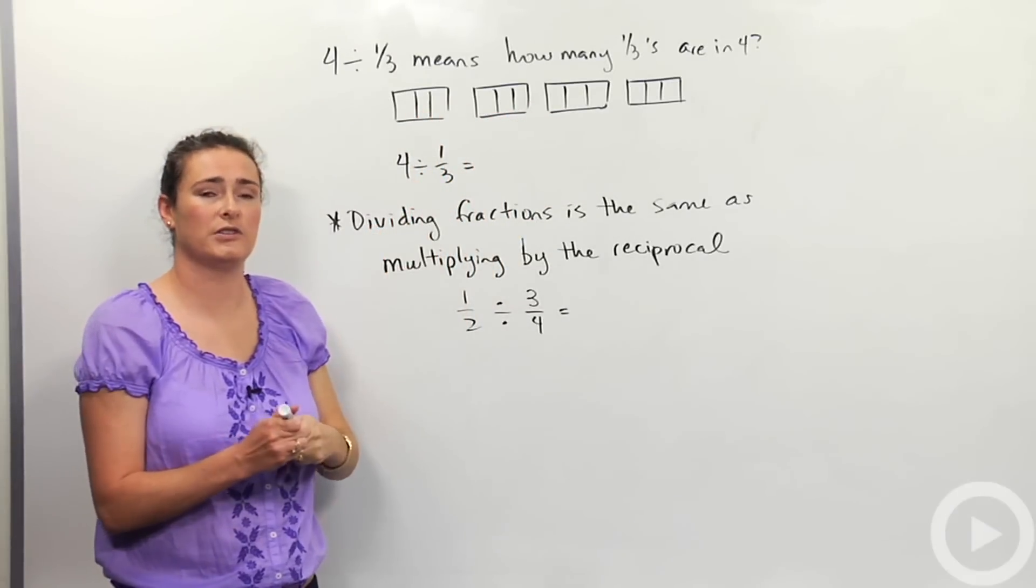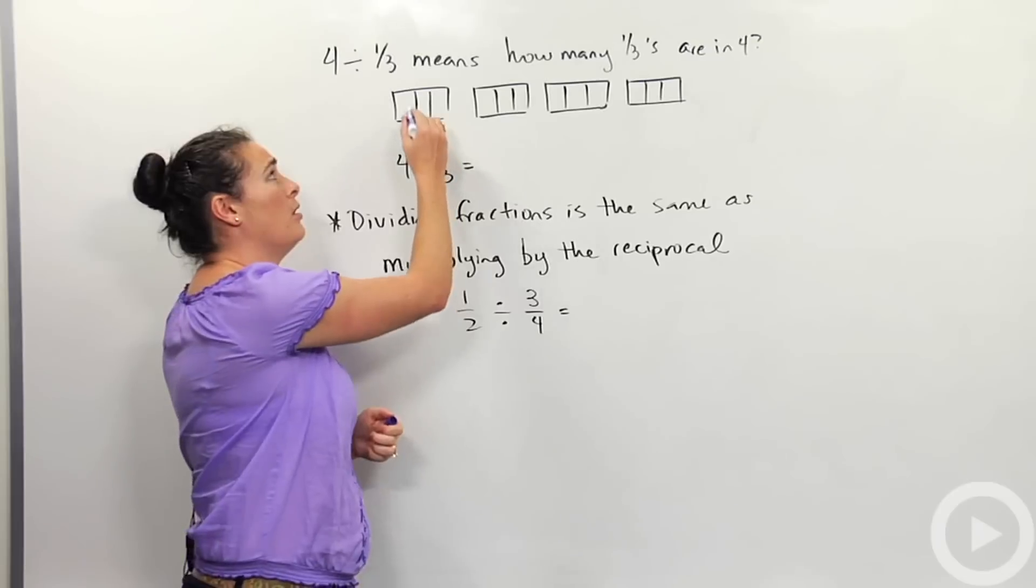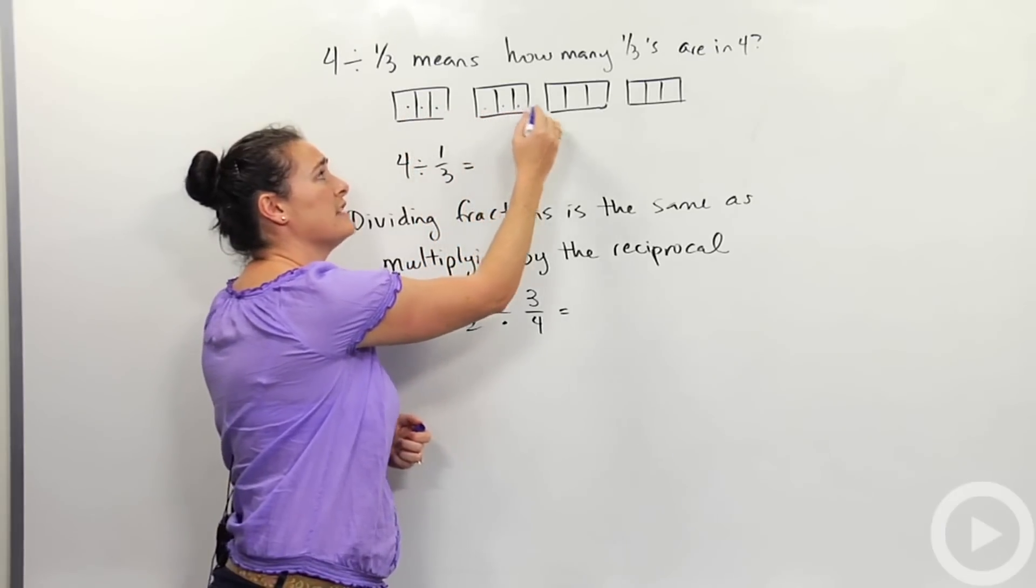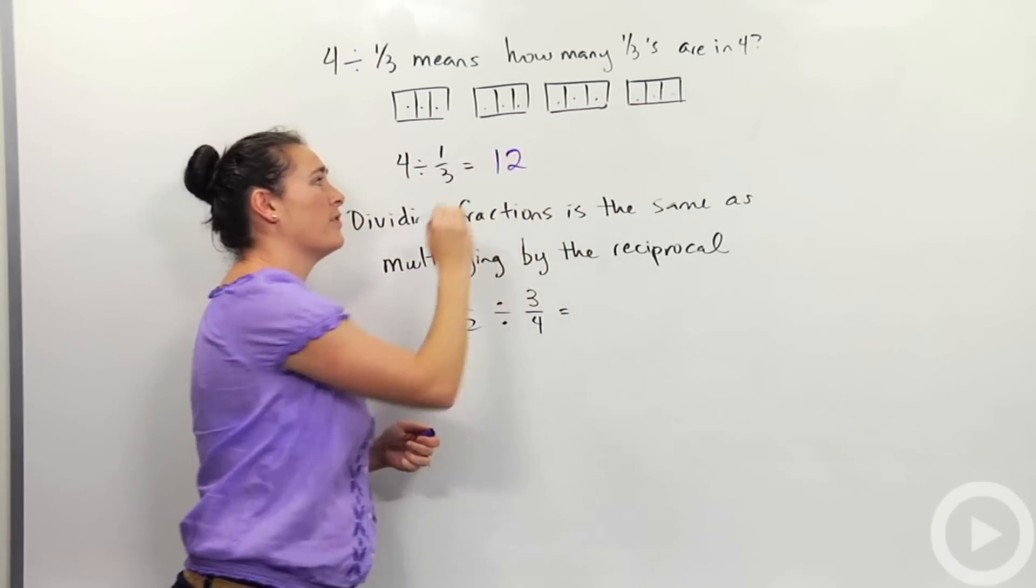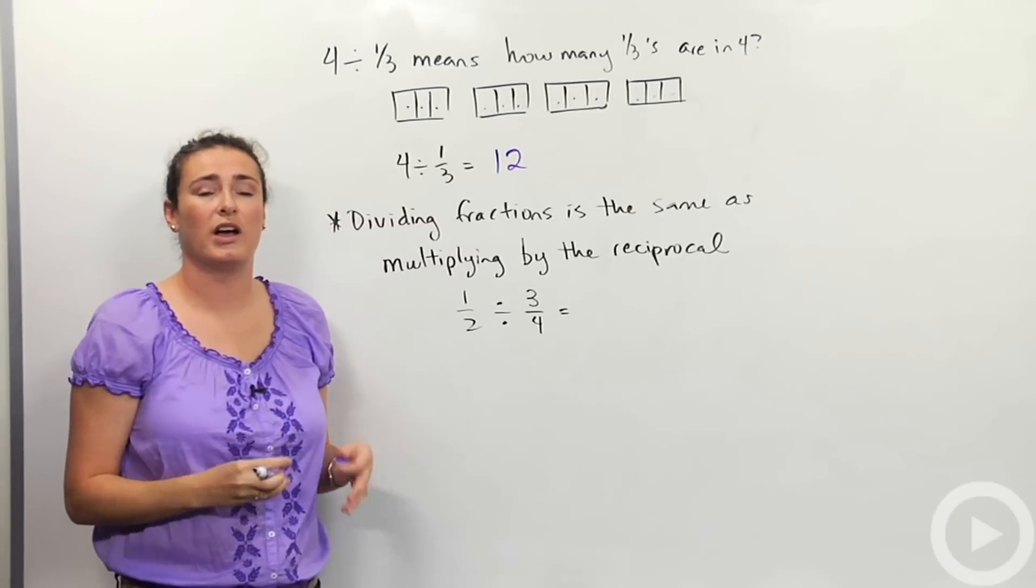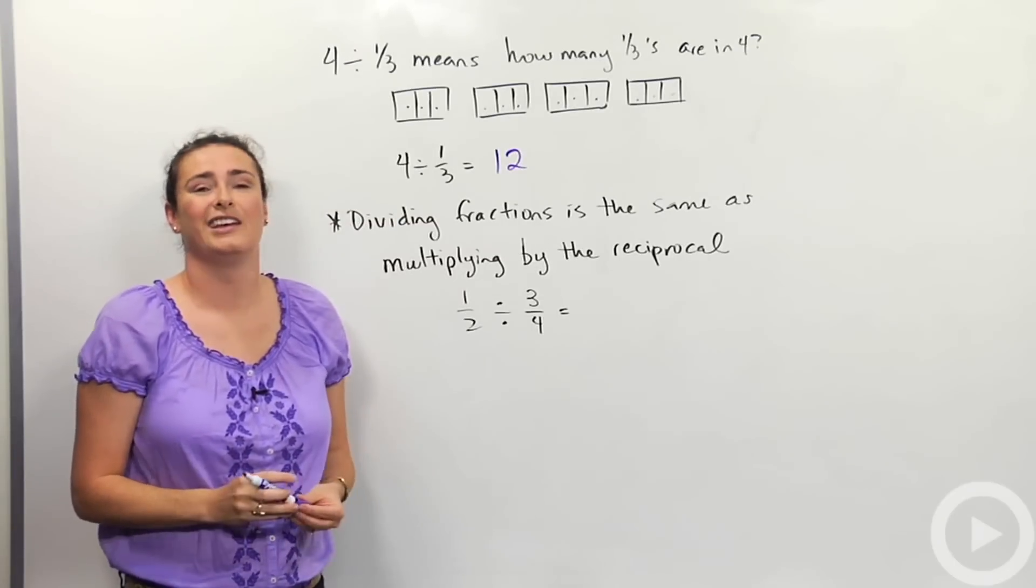So if we're saying how many one-thirds are there in four, I'm going to count them up. One, two, three, four, five, six, seven, eight, nine, ten, eleven, twelve. Four divided by one-third is twelve. There are twelve one-thirds in four.